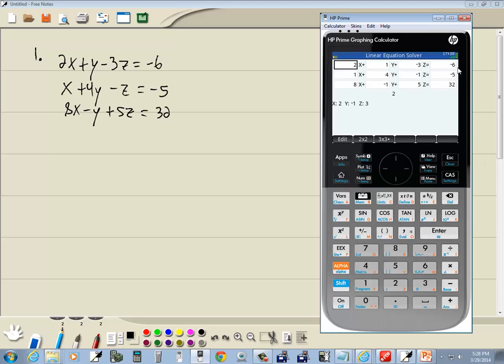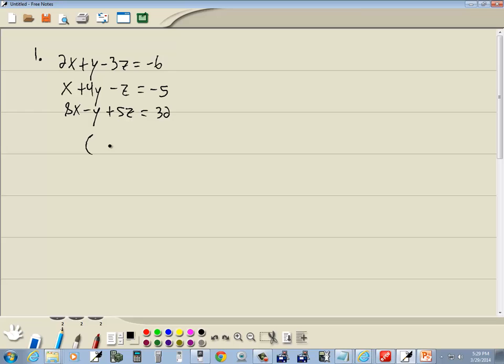Now I'm going to double-check all my numbers. Negative 6, negative 5, 32. Negative 3, negative 1, 5. 1, 4, negative 1, 2, 1, 8. And it tells us our answer is x=2, y=-1, z=3. Usually you write this in parentheses around it. So I've got (2, -1, 3). And that's our answer.